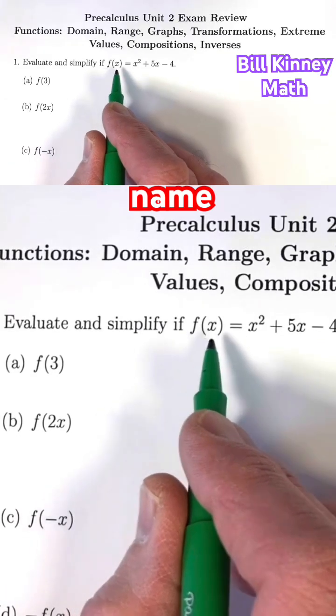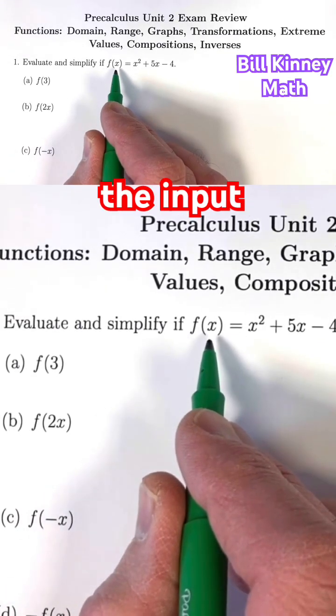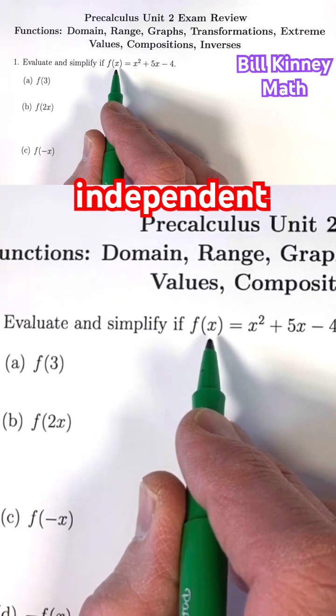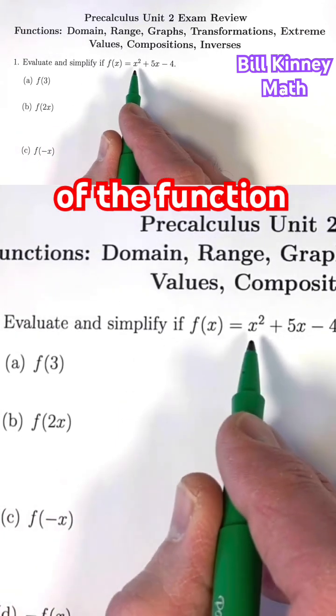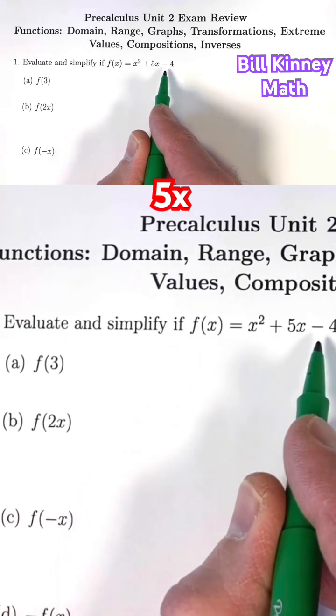F is the function name, x is the letter representing the input for the function, the independent variable, and this expression for any value of x gives you the output of the function: x squared plus 5x minus 4.